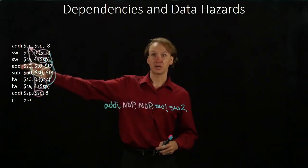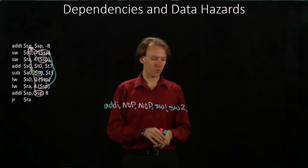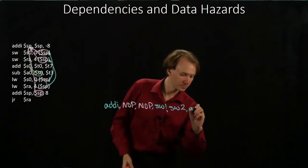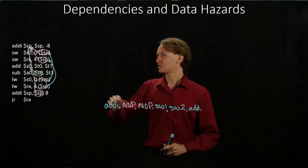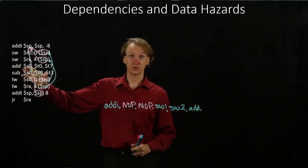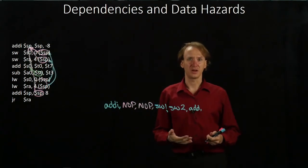My add instruction doesn't depend on anything. So I'll be able to run that one immediately. Then my subtract instruction depends on the results of the add instruction. So I'll have to wait two cycles there.